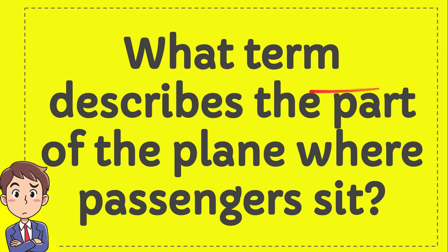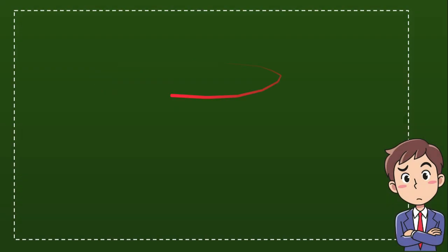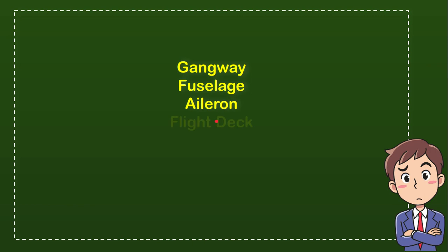What term describes the part of the plane where passengers sit? I'll give you four options and you need to guess the correct answer. The first option is gangway, the second option is fuselage, the third option is island, and the last option is flight deck. From these four options, which one do you think is the correct answer?